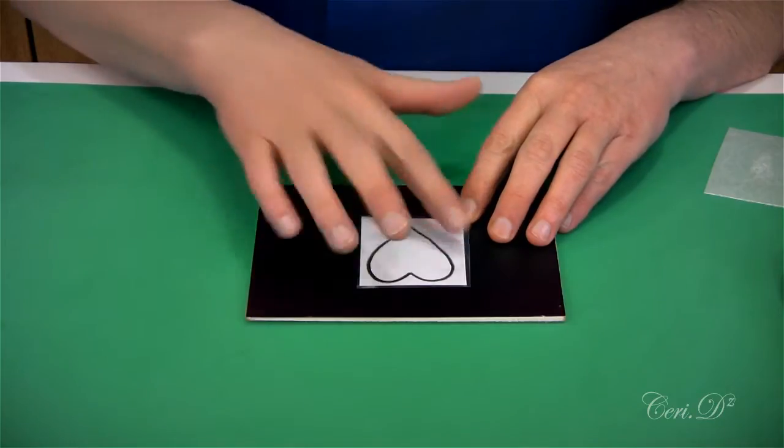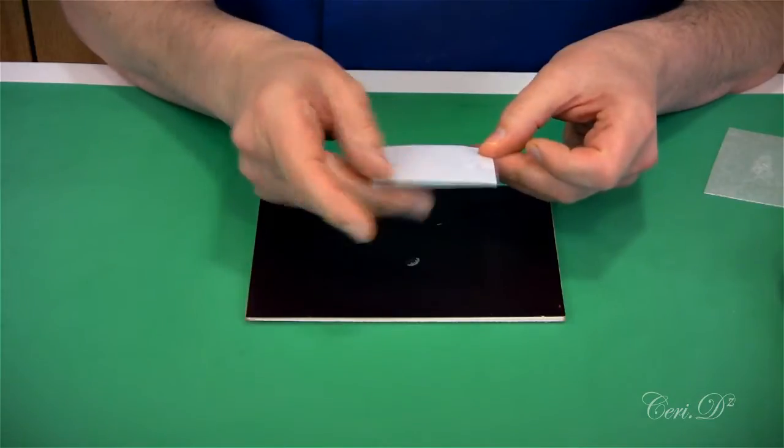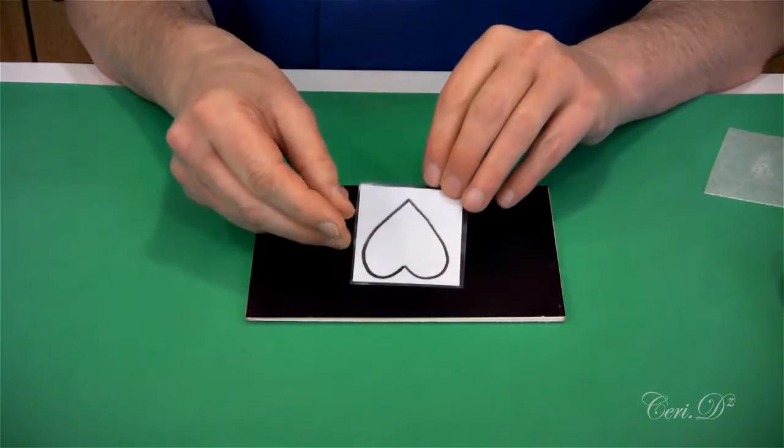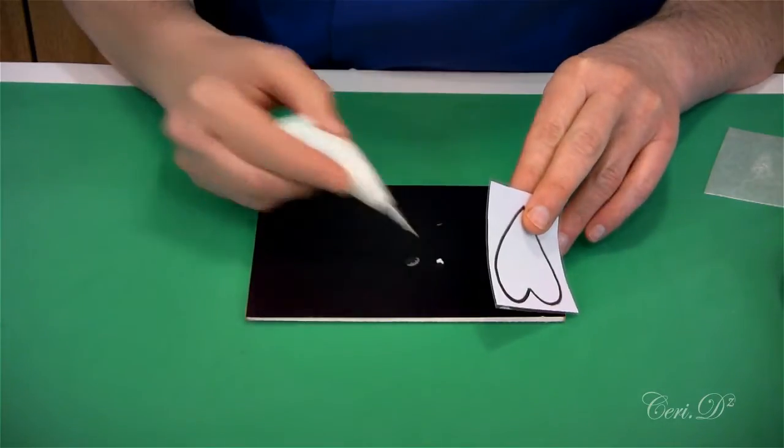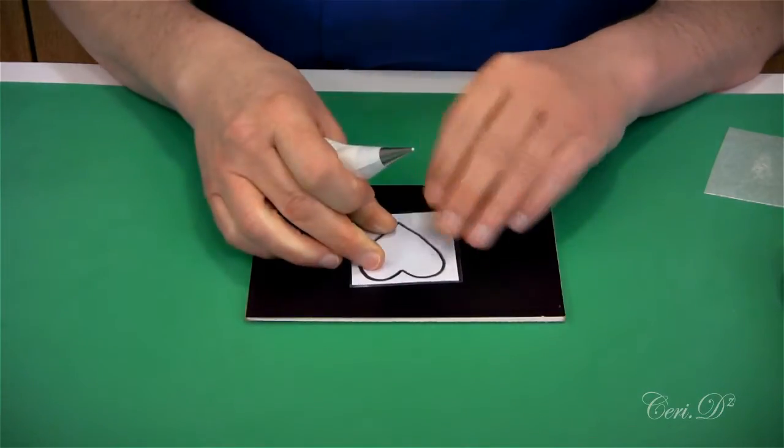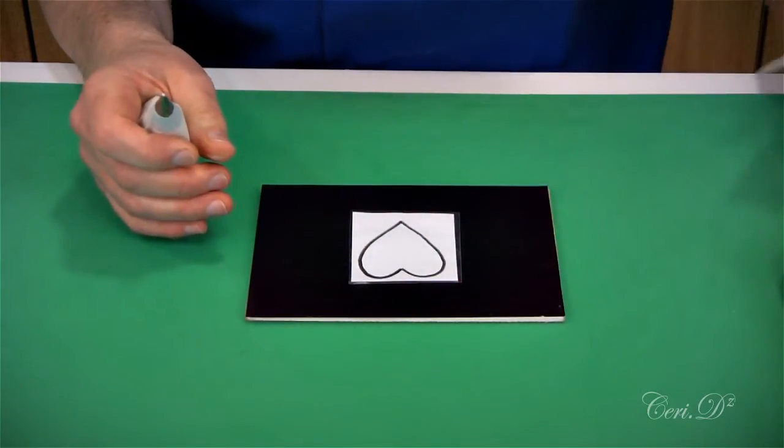I've drawn around a heart-shaped cutter. This one I've laminated because I use it a lot, but it could just be a piece of card. I'm going to stick it to my board with a few dabs of royal icing so I can move the board around without dislodging my template.